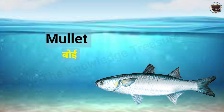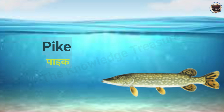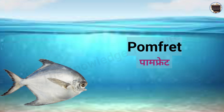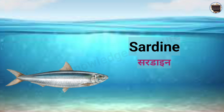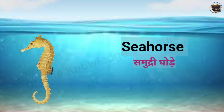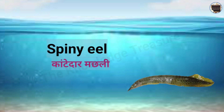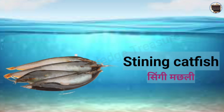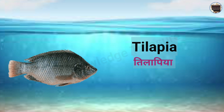Mullet – Boy. Climbing perch – Kawai. Pike – Pike. Pomfret – Palm fret. Ribbon – Ribbon. Sardine – Shardine. Sawfish – Aara machli. Seahorse – Samundri ghoda. Snakehead – Mooral. Spiny eel – Kaantedar machli. Squid – Squid. Stinging catfish – Singi machli. Tengra – Tengrata.